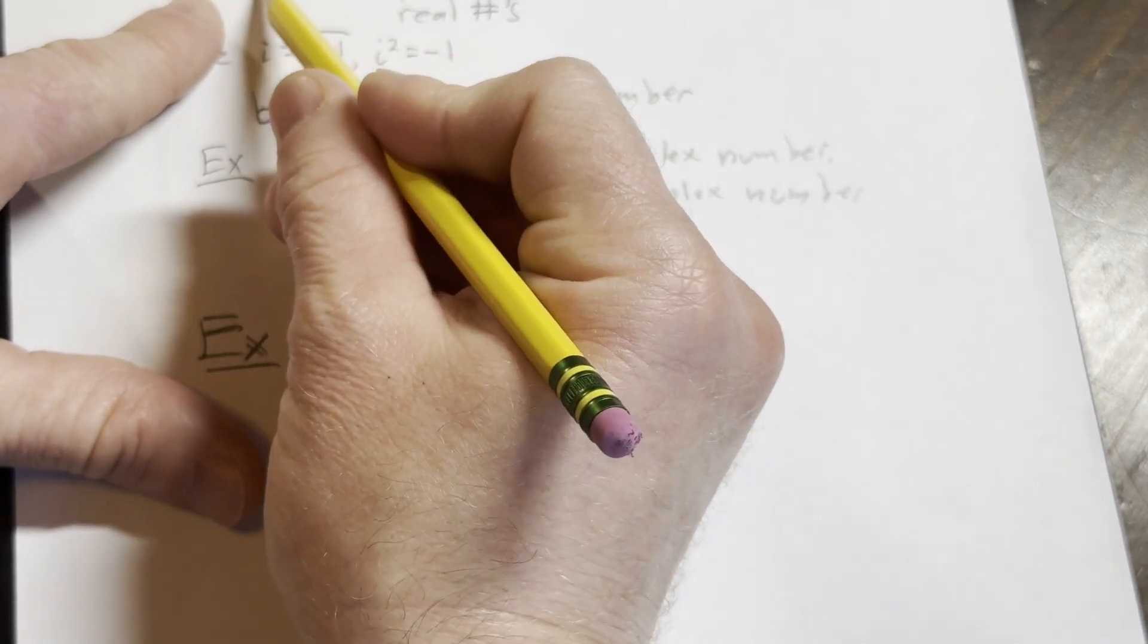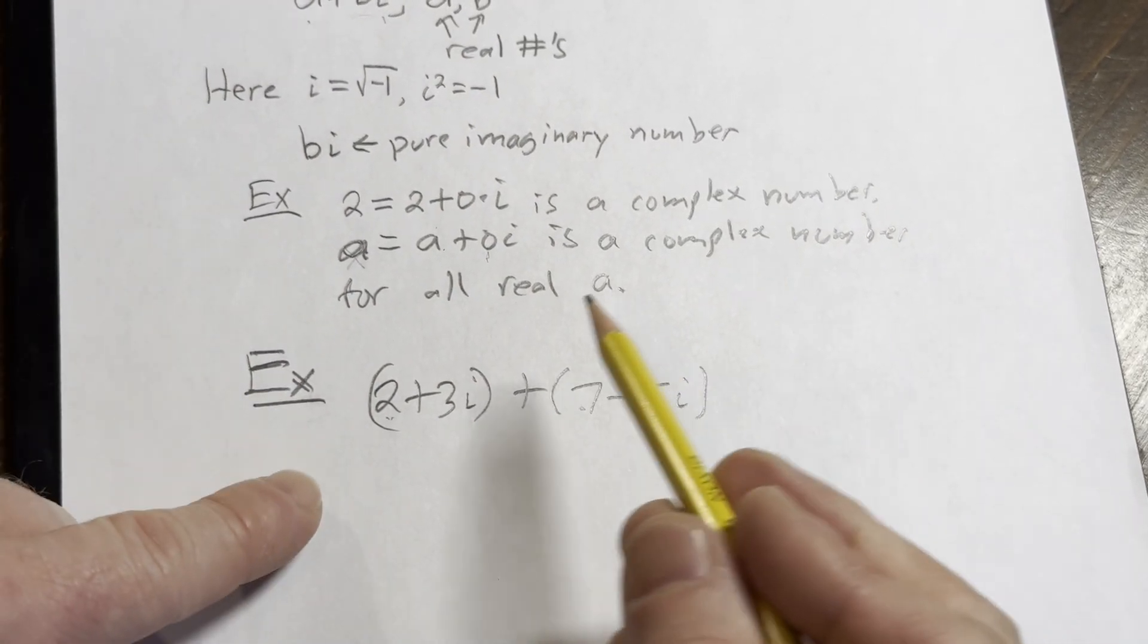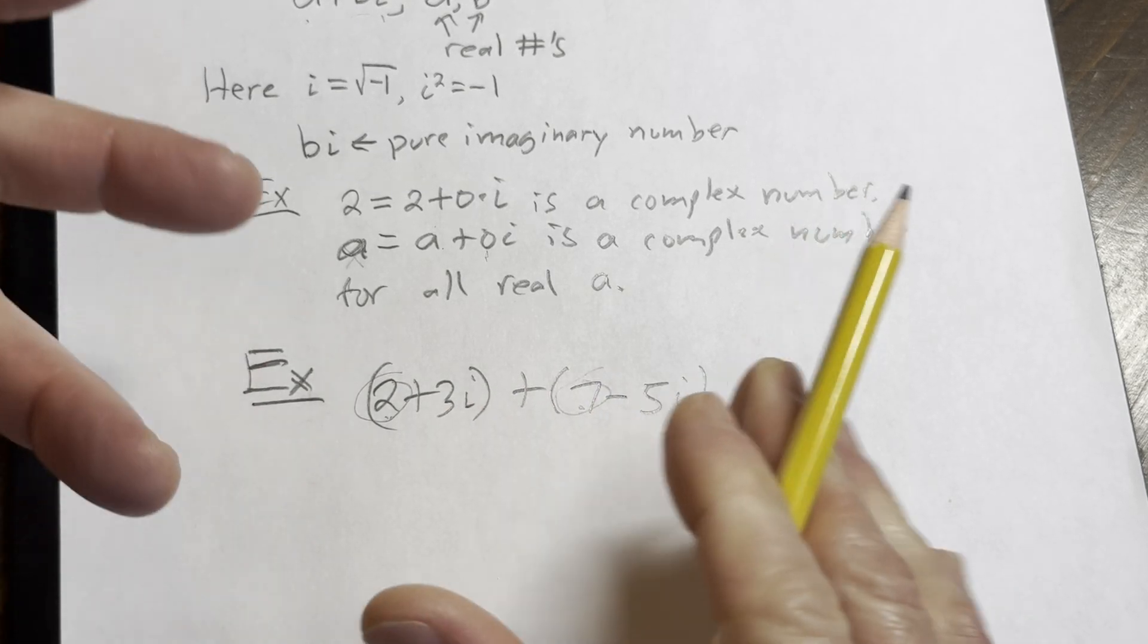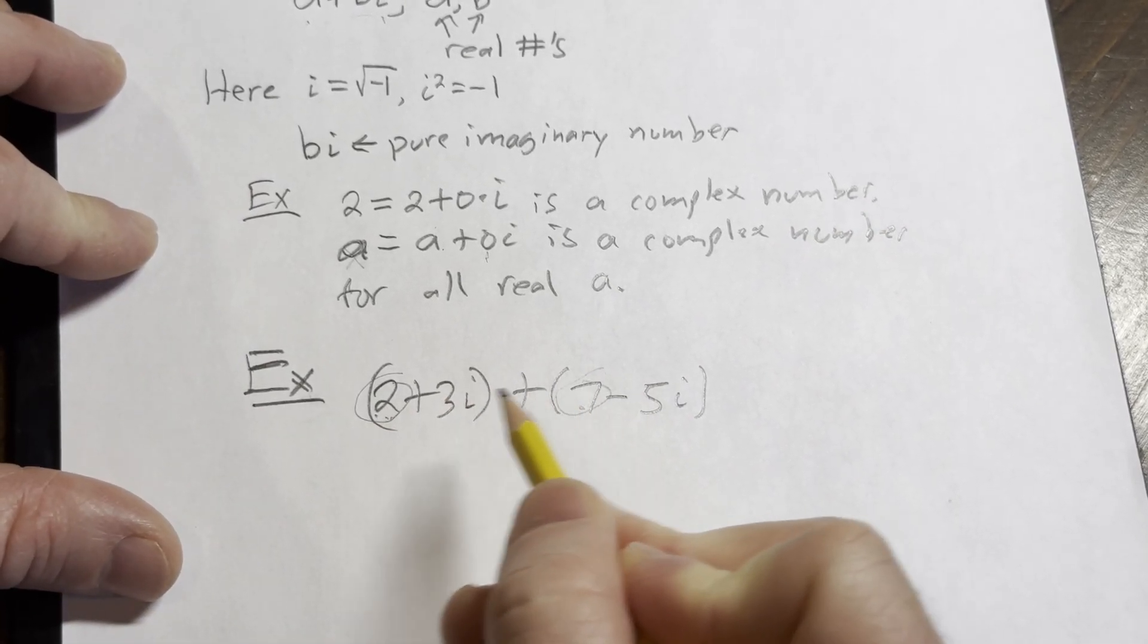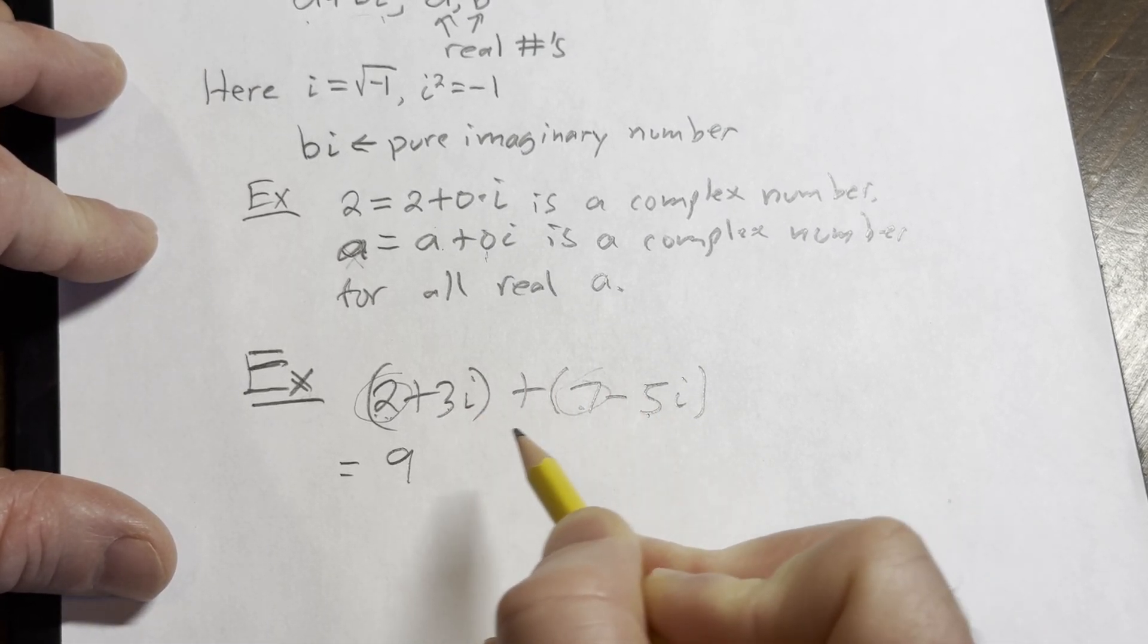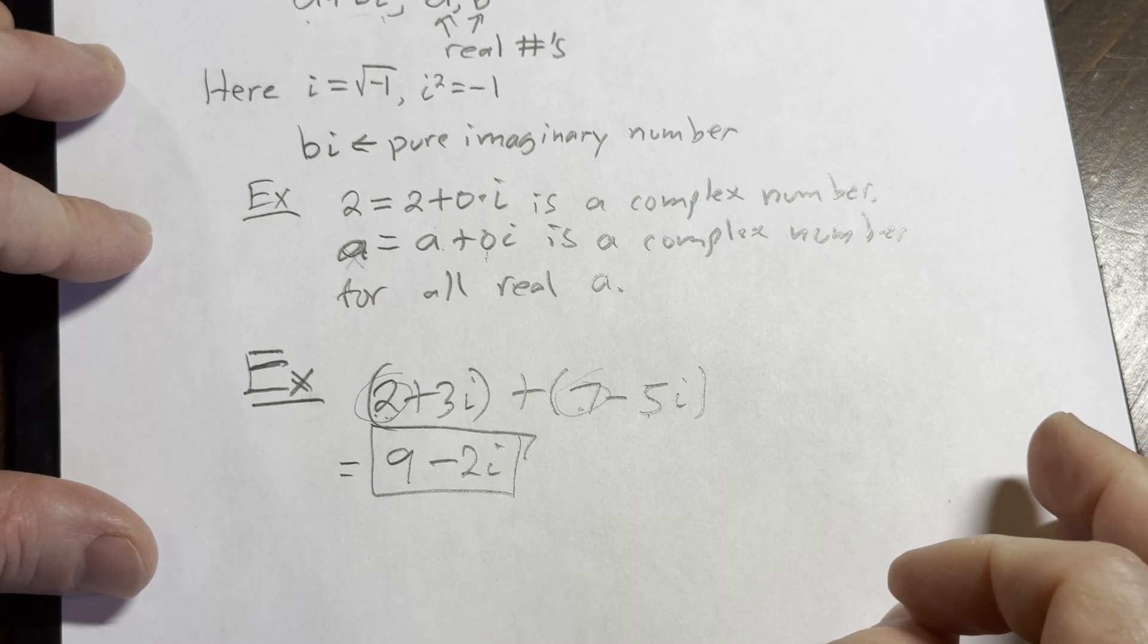By the way, a is called the real part, b is called the imaginary part. So the real parts would be the 2 and the 7, the parts that don't have the i's. So 2 plus 7 is 9. And 3i minus 5i is minus 2i. So the answer is 9 minus 2i.